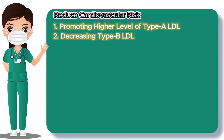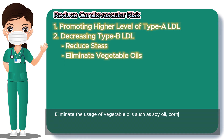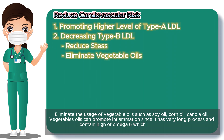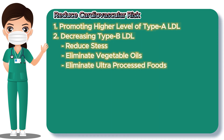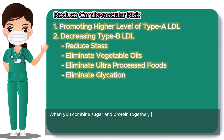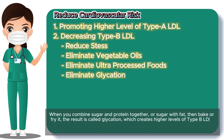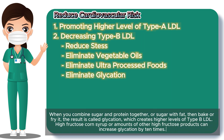Number 2: Decreasing type B LDL. Several actions can help lower type B LDL. First, reduce stress in order to lower unhealthy levels of cortisol. Second, eliminate the use of vegetable oils such as soy oil, corn oil, and canola oil, as these can promote inflammation due to their high omega-6 content. Third, eliminate ultra-processed foods that contain high levels of trans fats. Fourth, eliminate glycation — when you combine sugar and protein, or sugar with fat, then bake or fry it, the result is glycation, which creates higher levels of type B LDL. High-fructose corn syrup and other high-fructose products can increase glycation by 10 times.